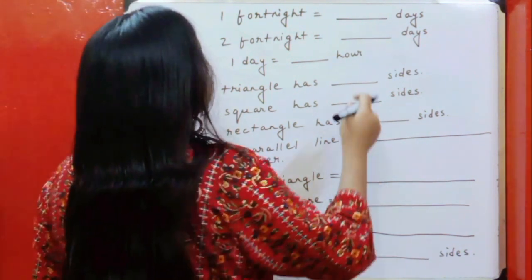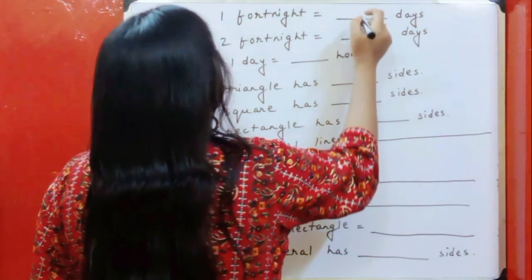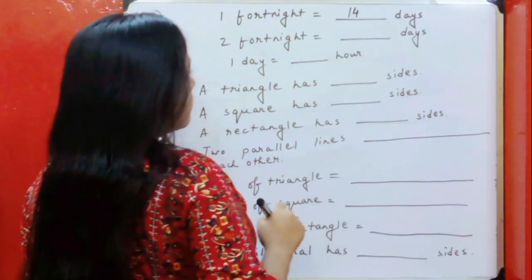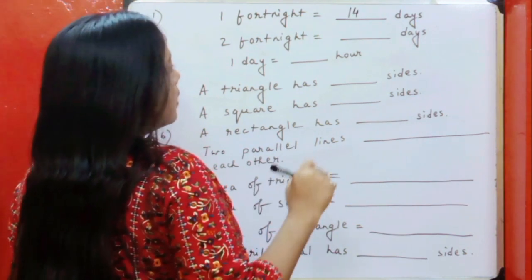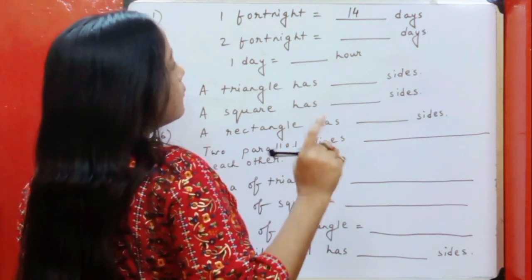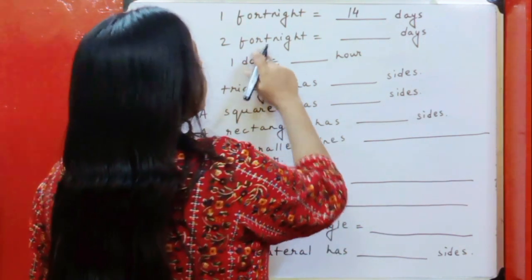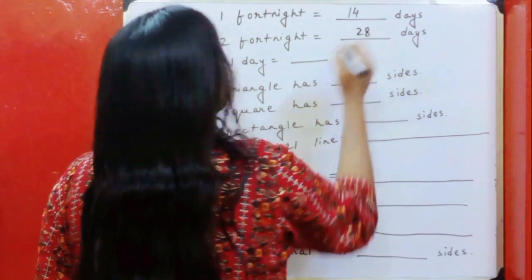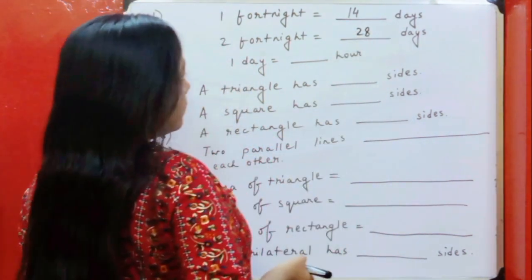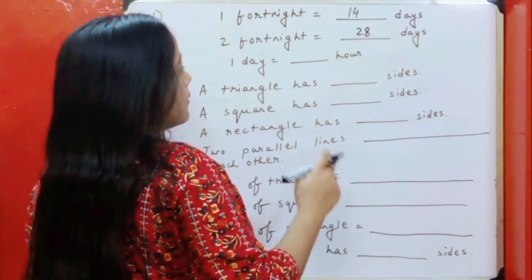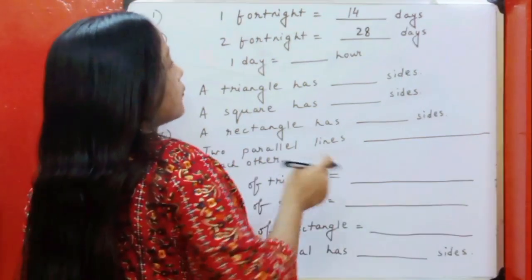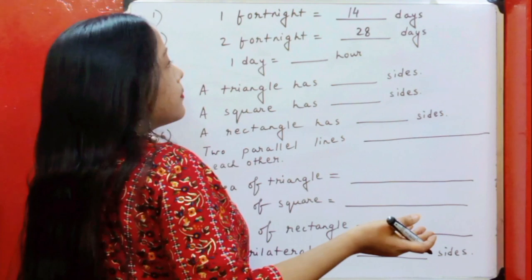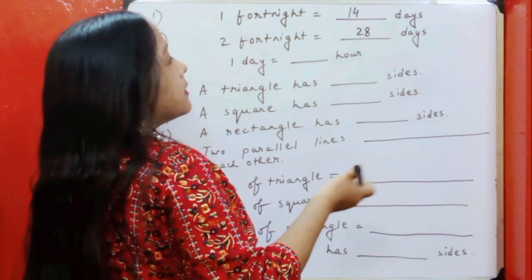Let's begin. One fortnight is equal to 14 days. Therefore, two fortnight is equal to 14 multiplied by 2 — 28 days.